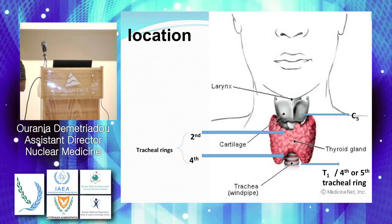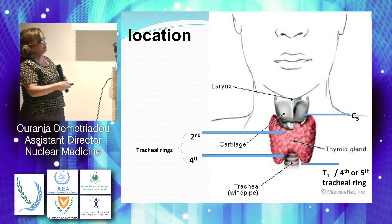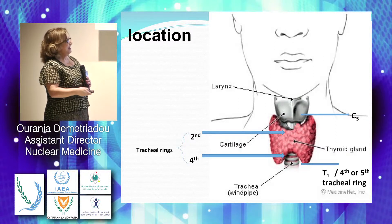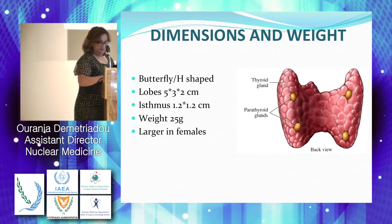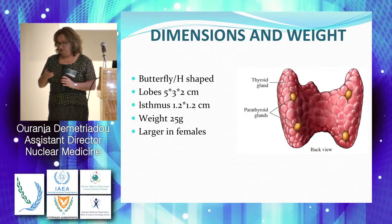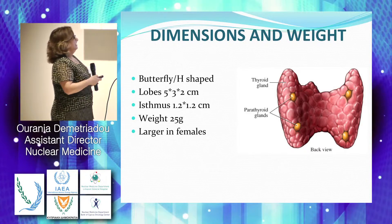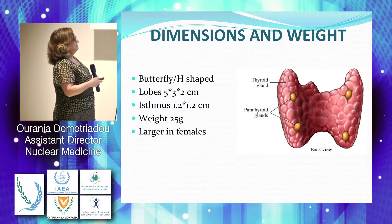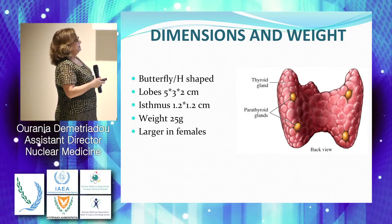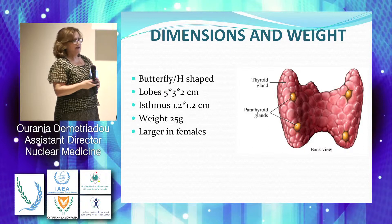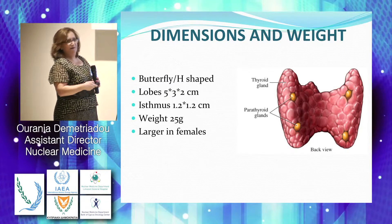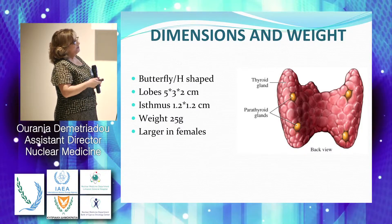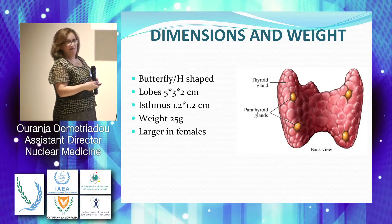The thyroid gland is located between the fifth cervical vertebra and the first thoracic vertebra. It has a butterfly shape or an H shape. The size of the thyroid gland is approximately 5 by 3 by 2, the isthmus 1.2 to 1.5 centimeters, and it weighs approximately 25 grams. Usually it's larger in females, and on the posterior part of the thyroid gland we have the four parathyroid glands.